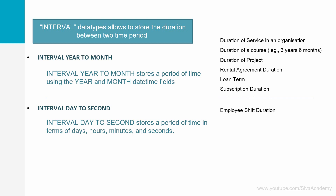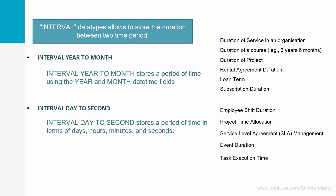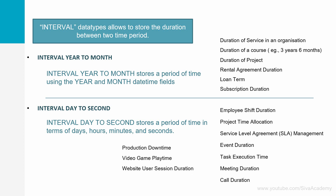But whenever the duration is very small, then we can use the interval day to second. Examples include: employee shift duration, project time allocation, service level agreement, event duration, task execution time, meeting duration, call duration, production downtime, time a user spent in a video game or on a website, duration of a stock market session, or how long a particular sports event took. In all these cases the duration is very small, so we can use the interval day to second data type.